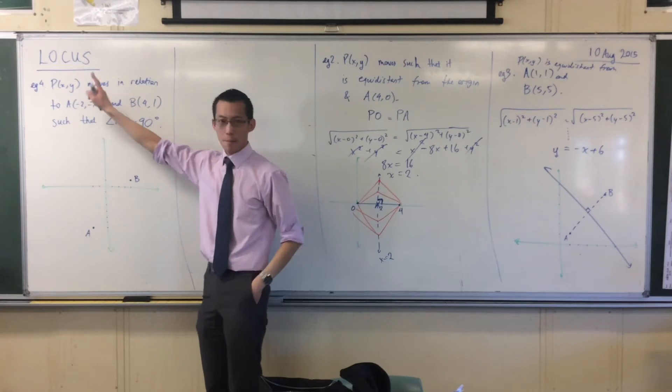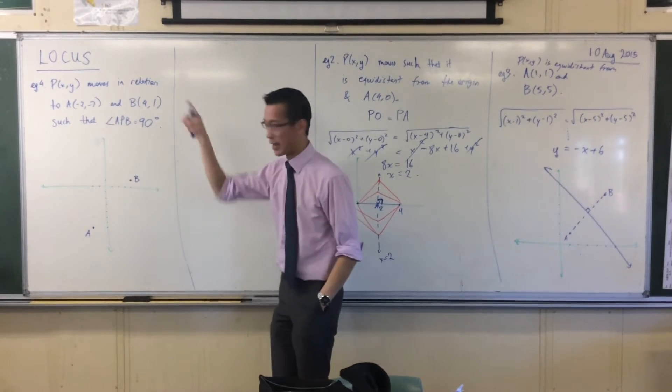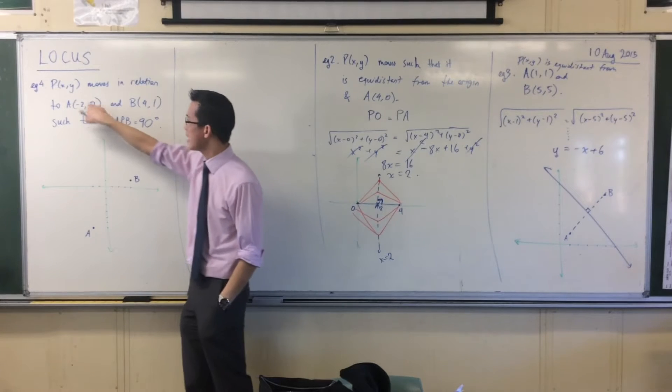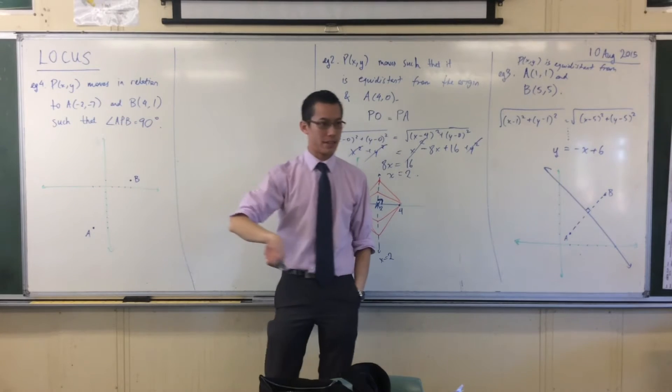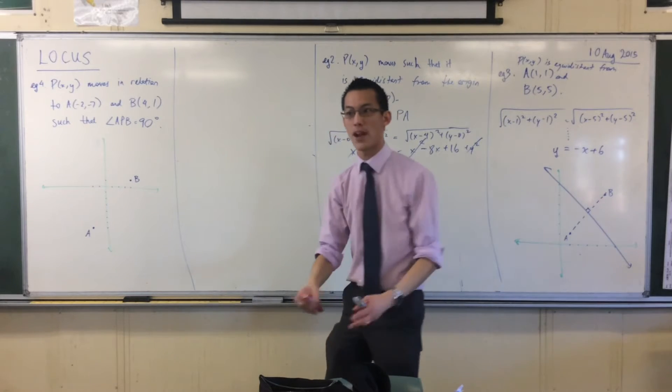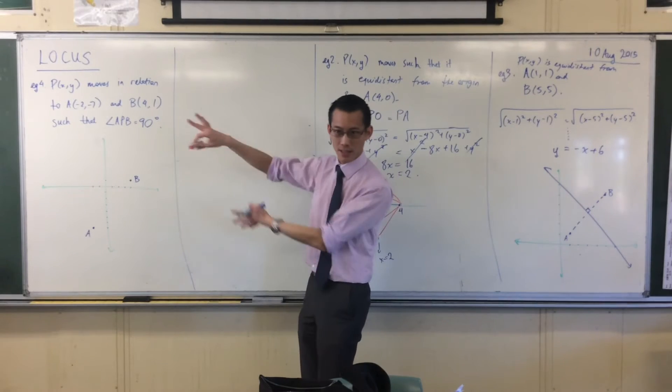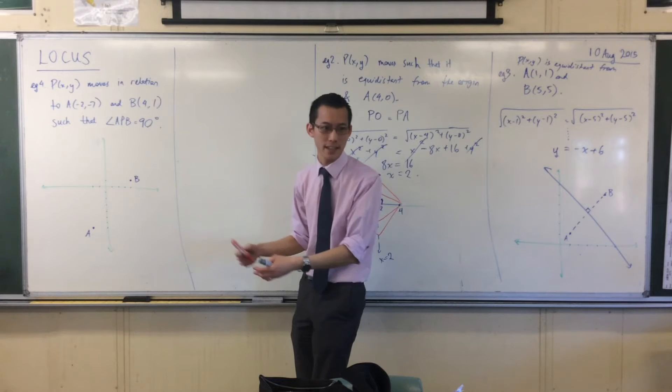So you have P moving around some place, such that the angle you get from A to that point, to this other point, to B, will be 90 degrees. Now I can draw a couple of these very easily, because I've got perpendicular coordinate axes.